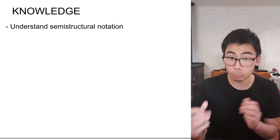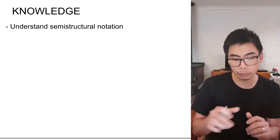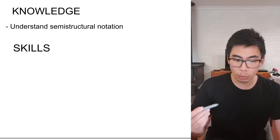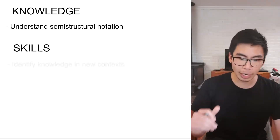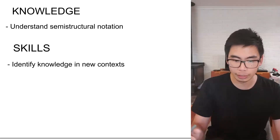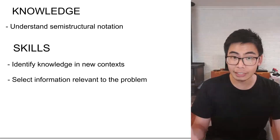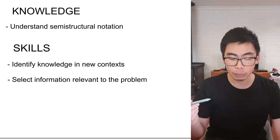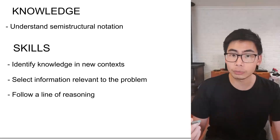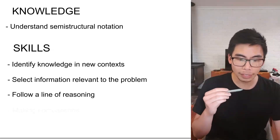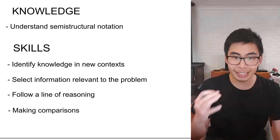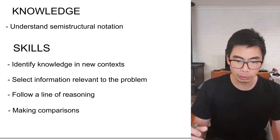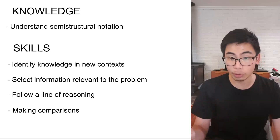In summary, what did we need to know? We needed to know that CH3 is a carbon connected to three hydrogens, and that CH3 in brackets with a subscript 2 means two identical groups. More importantly are the skills: identifying knowledge in new contexts, selecting information relevant to the problem, following lines of reasoning laid out in the stimulus, and making comparisons — systematically comparing which structure has more hyperconjugations, those specific hydrogen-to-carbon bonds.